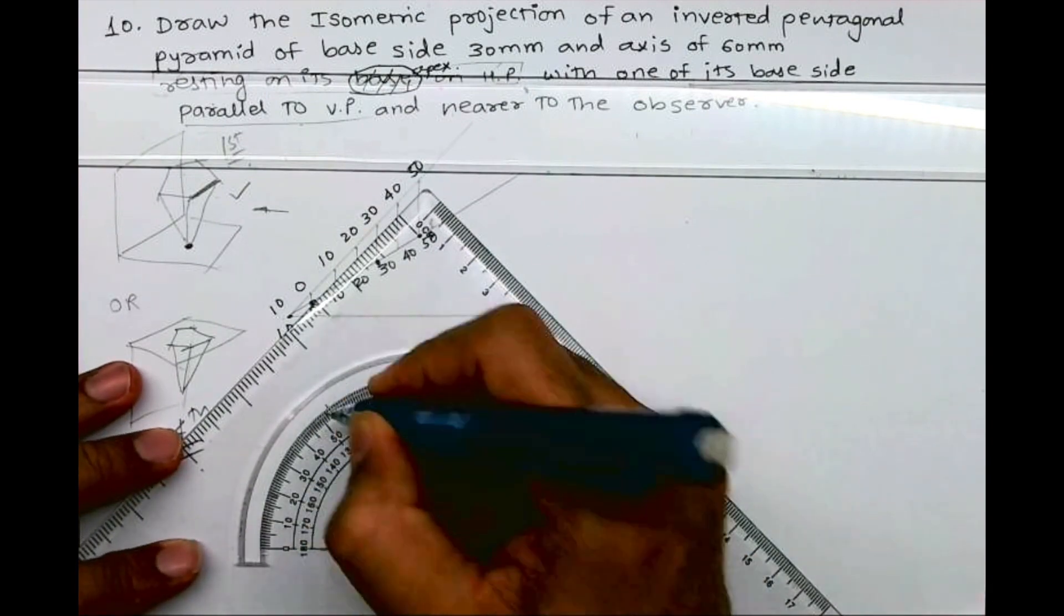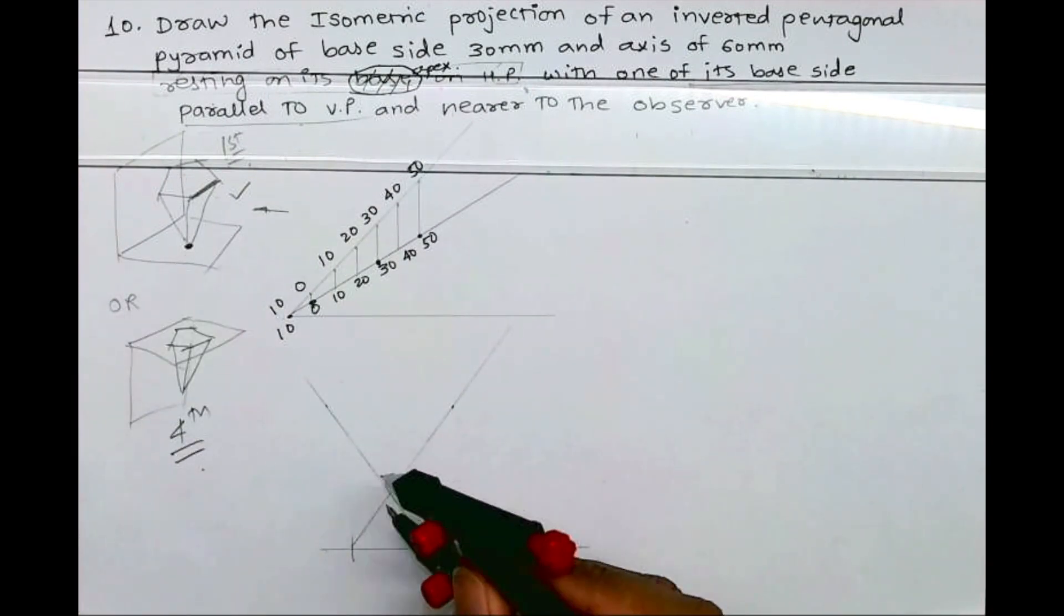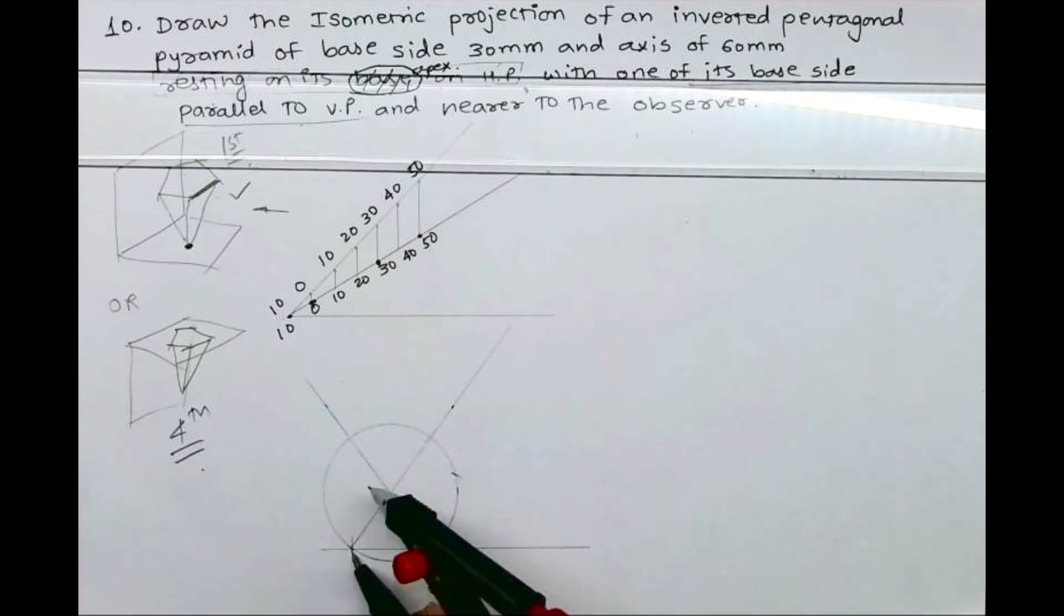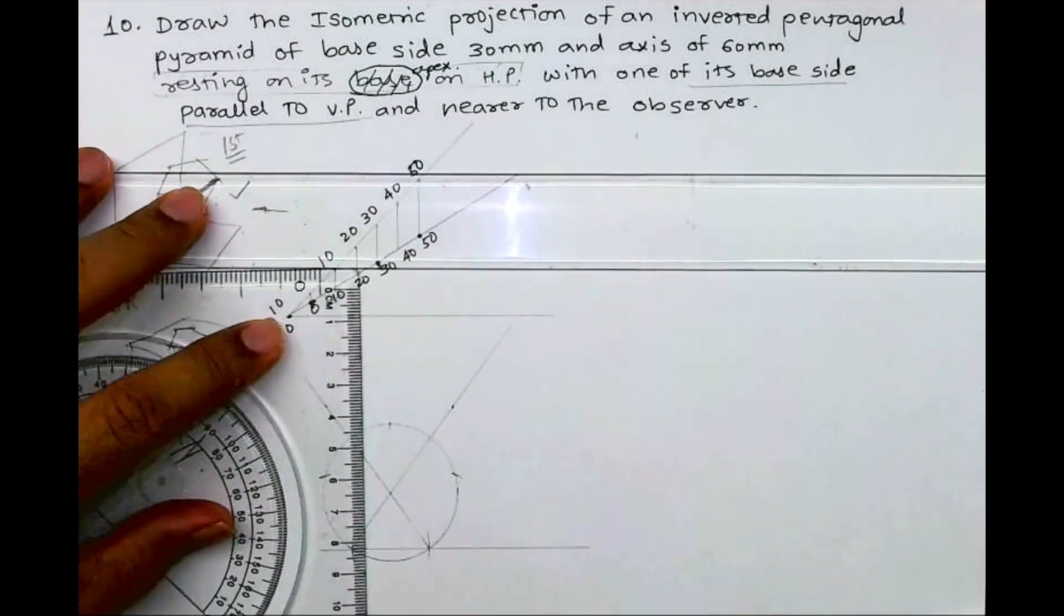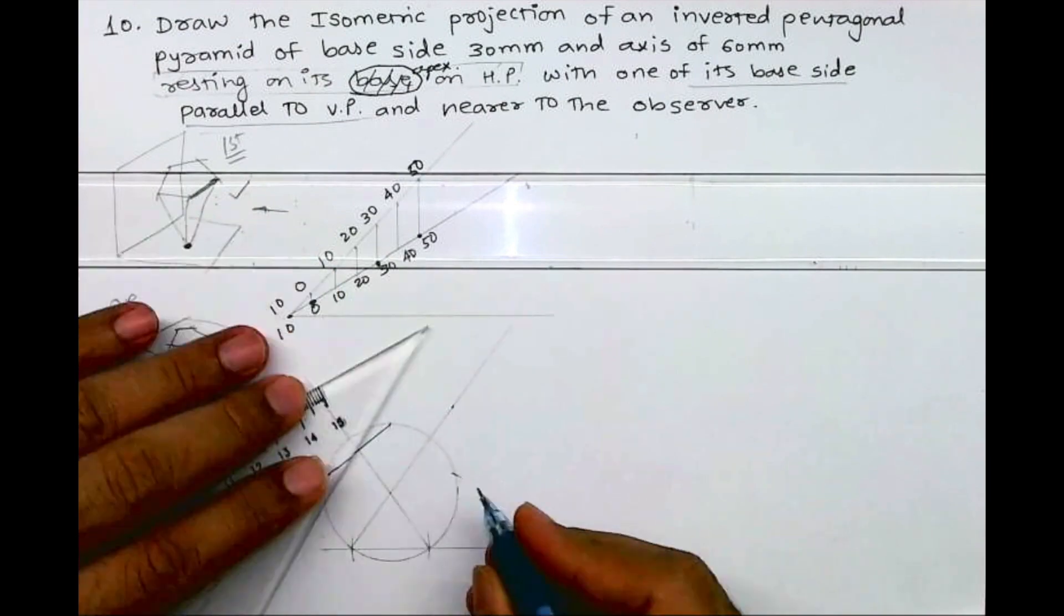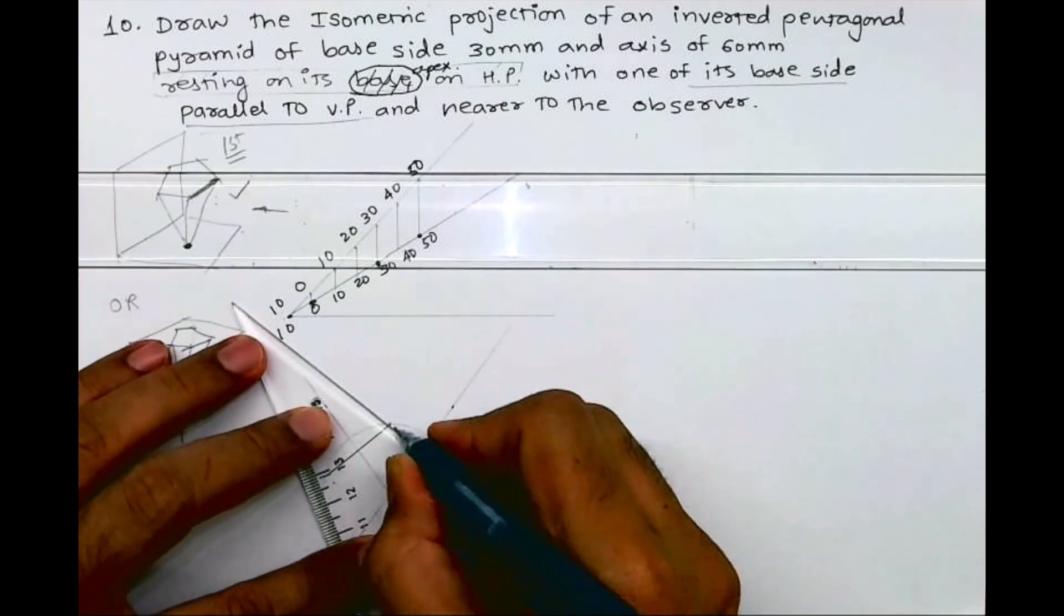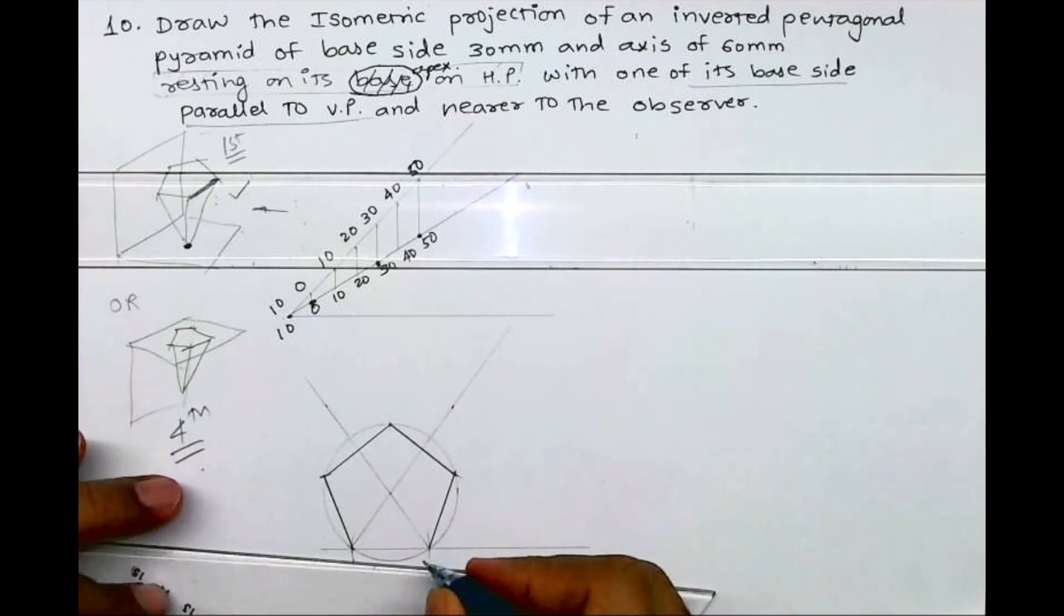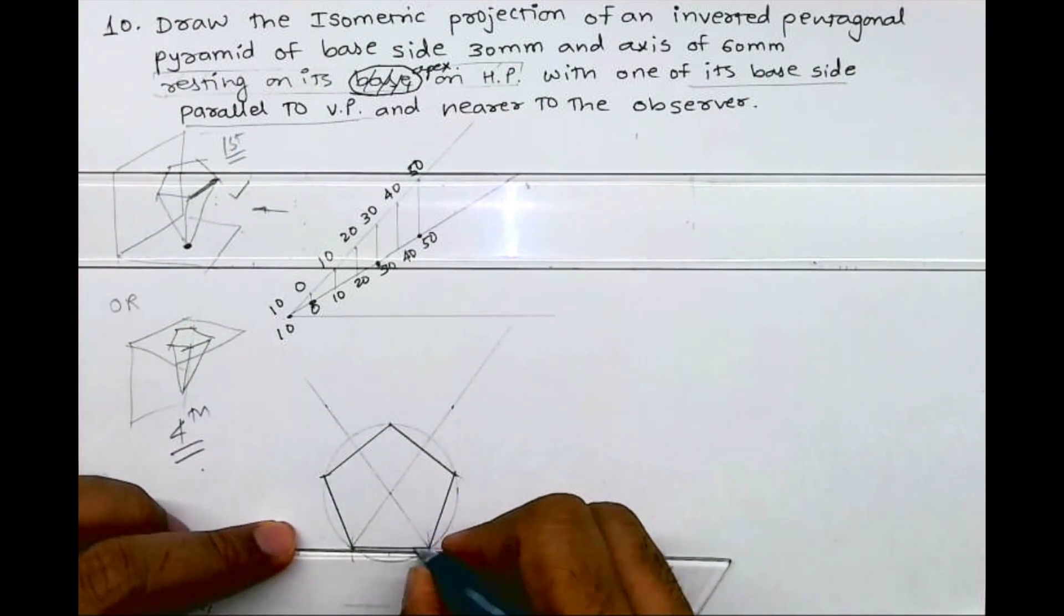Once we are done with this pentagon, we'll convert this into a box of 1, 2, 3, 4 and we'll write pentagon side as A, B, C, D, E.